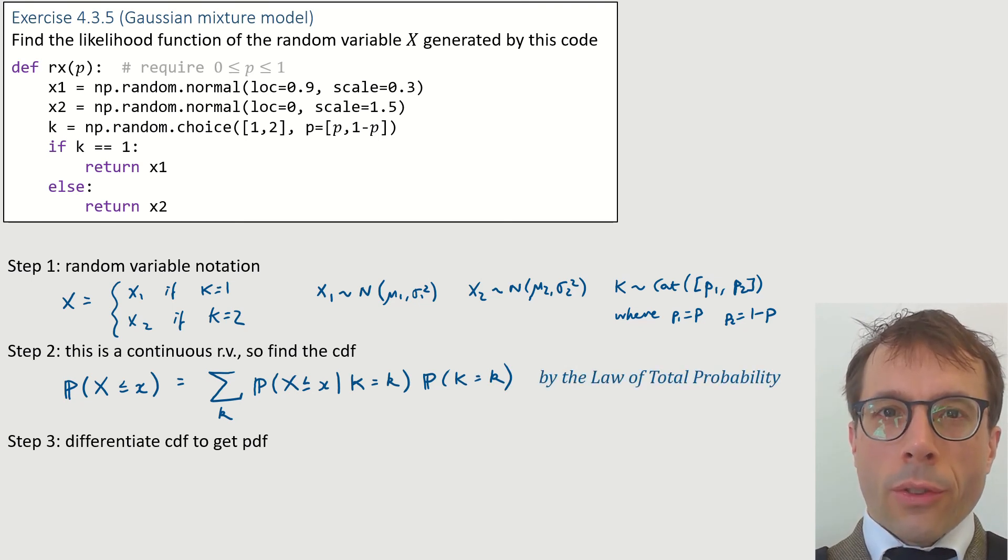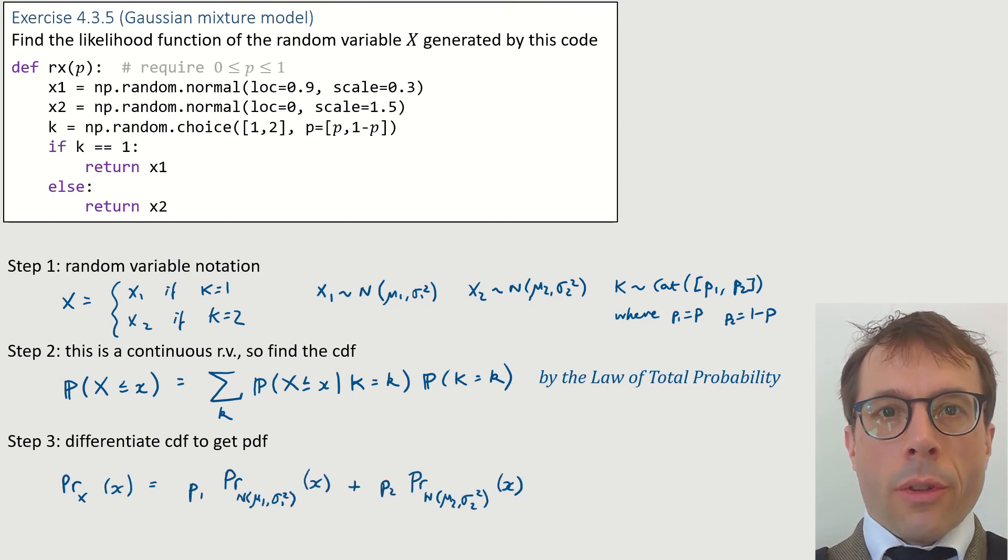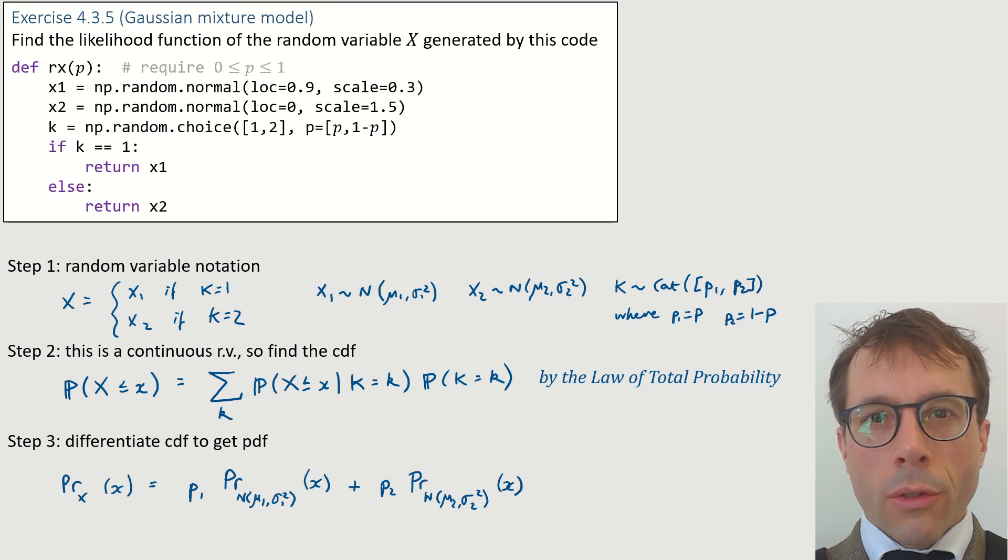The only thing that's new in this exercise is how we do step two, finding the CDF. I want to know the probability that big x is less than or equal to little x, and x is generated differently based on the value of k. So I broke down the probability by conditioning on k. This is called the law of total probability, and it crops up a lot when we have this sort of first generate one value and based on that generate a second. And this is the answer that comes out in the end. If you want to check your working, look at the printed notes. And the printed notes also have a few more examples, including discrete random variables.